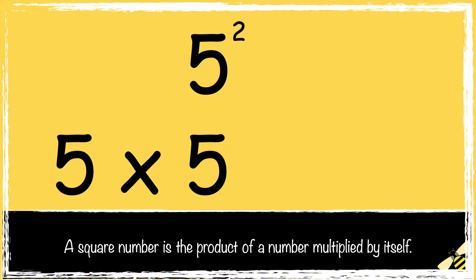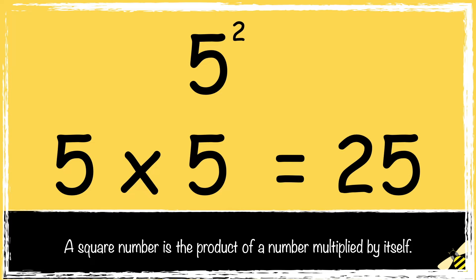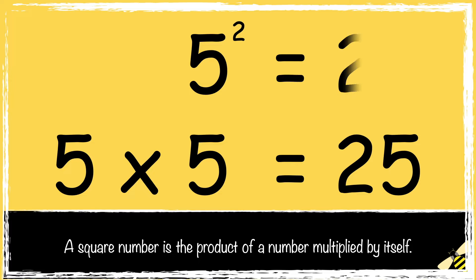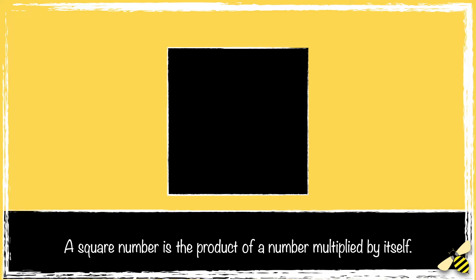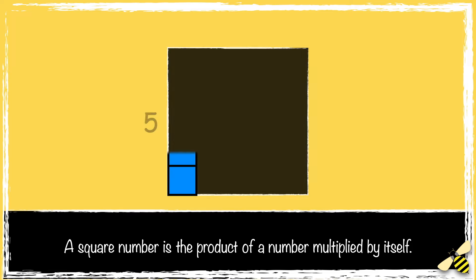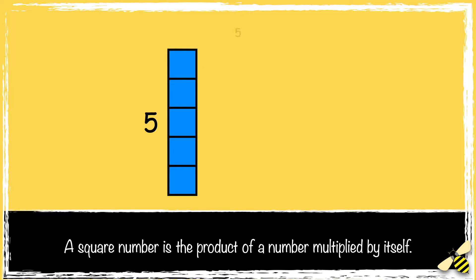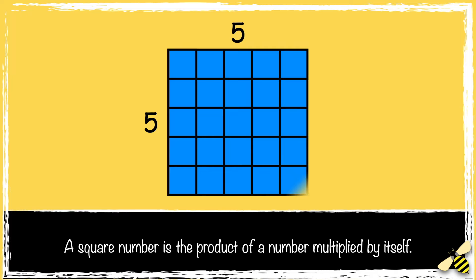Let's look at this example. 5 times 5 is 25, so 5 squared is 25. The reason it's called a square number is because it can make a square. 5 multiplied by 5 makes a square of 25.